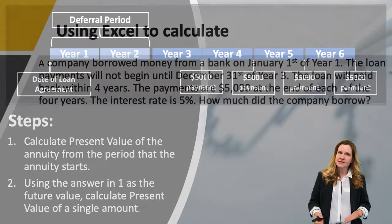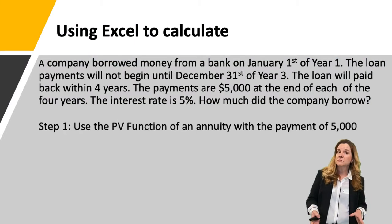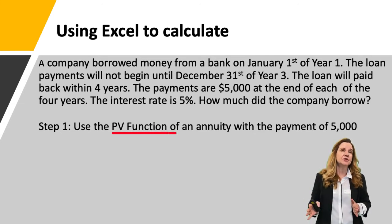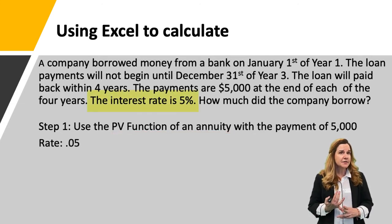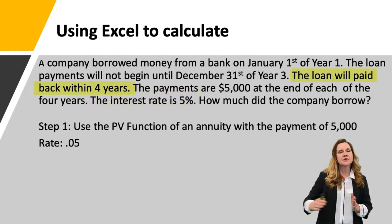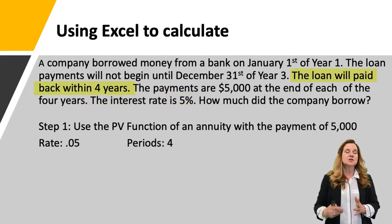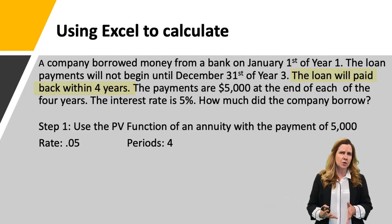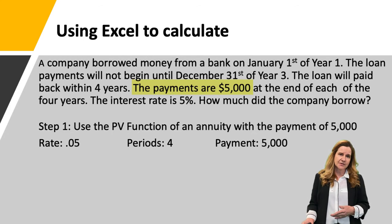Looking back at the example, on step one we're going to do this in Excel and use the present value function. We're looking at the present value of the annuity portion. The rate is five percent, the number of periods is four — the payment is happening four times — and the payment amount is $5,000.